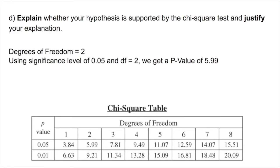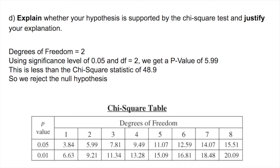We're going to use the significance level of 0.05 and two degrees of freedom. If you look at our table that's provided in the AP Biology formula sheet, you get a p-value of 5.99. And this is less than the chi-square statistic of 48.9 that we found, and so this means that we can reject the null hypothesis.